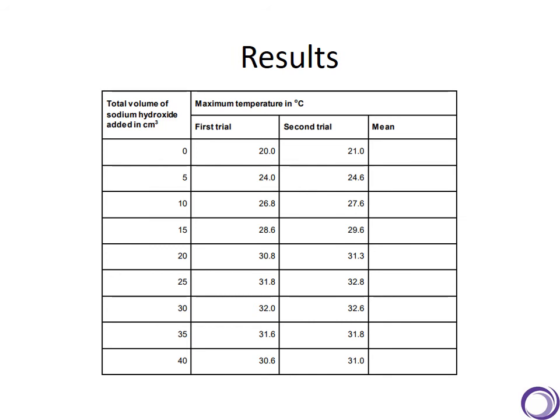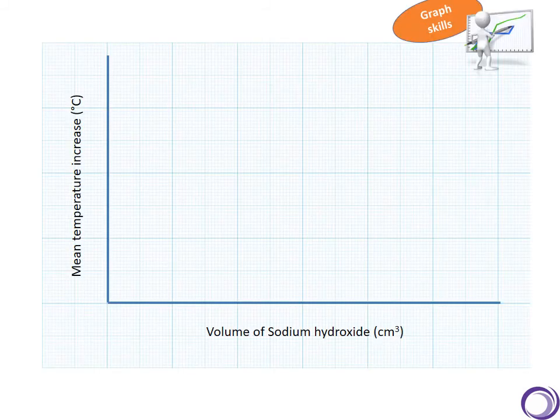Once we have a set of results, then we could draw a graph. This time the independent variable, the thing that we changed, was the volume of sodium hydroxide, so this goes along the bottom on the x-axis. What we measured was the temperature increase, so this would go on the y-axis.